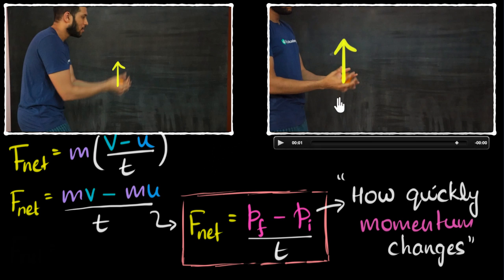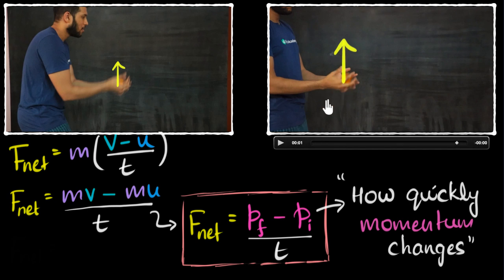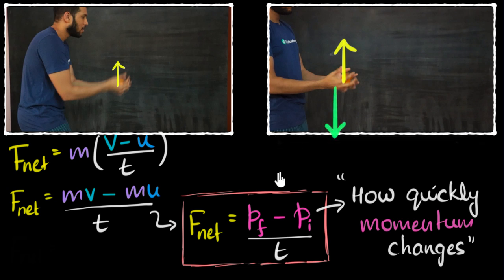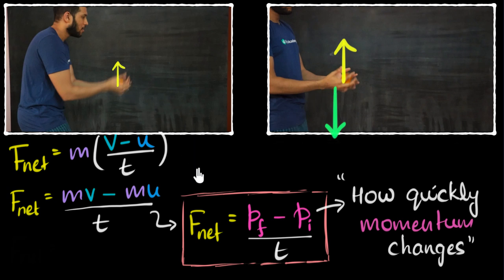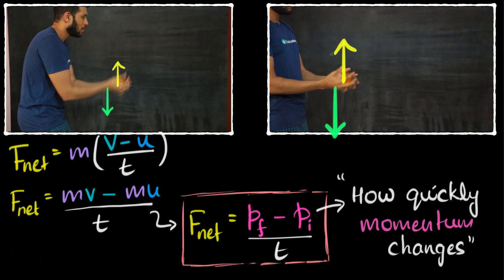So why does it hurt more when you catch stiffly? Newton's third law. If you are pushing on that ball with a big force, the ball will also push back on your hand with a big force — and that's what makes your hand hurt. Over here, since you're pushing the ball with a small force, the ball also pushes on your hand with a small force, and it doesn't hurt as much.